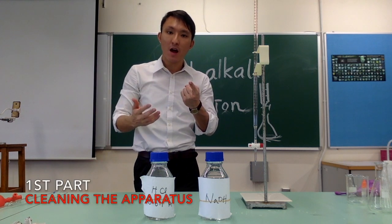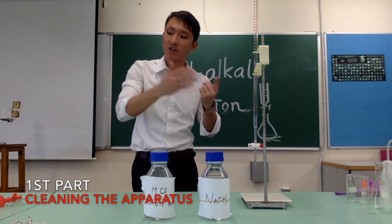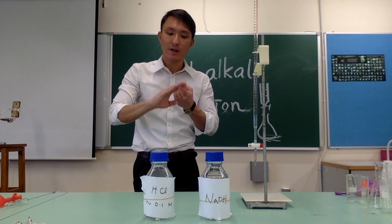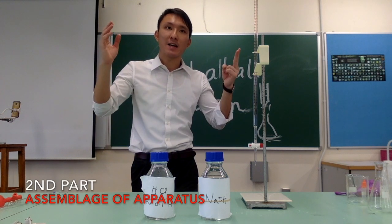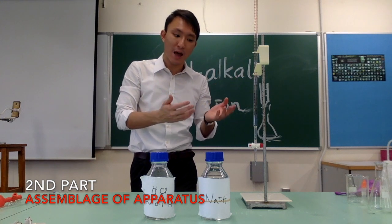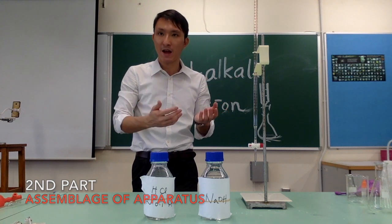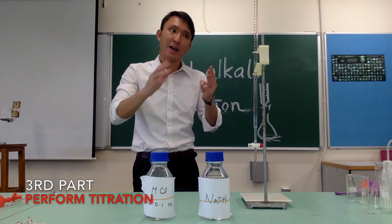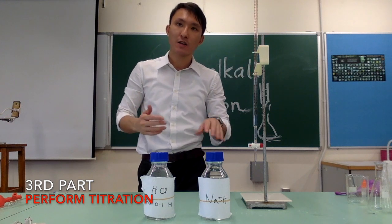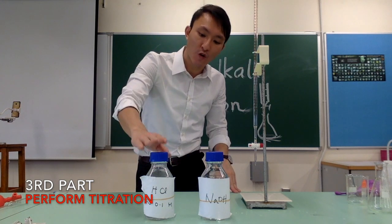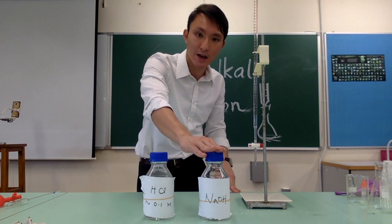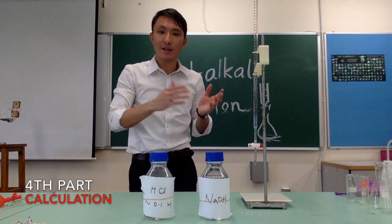The first part is the cleaning part, where we have to clean our apparatus — the pipette, the conical flask — so that they do not contaminate it. The second part is the assemblage of apparatus: how we set up the titration apparatus. The third part is the actual titration, where we will add our titrant into our analyte to find out how much volume of HCl is required to completely neutralize all the sodium hydroxide. And the last step will be the calculation part.